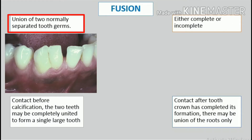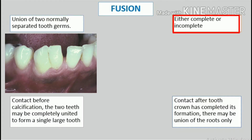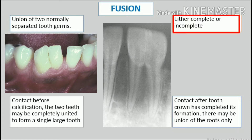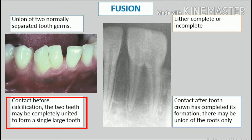Fusion. Fused teeth arise through union of two normally separated tooth germs. Depending upon the stage of development of the teeth at the time of union, fusion may be either complete or incomplete. If contact occurs early, at least before calcification begins, the two teeth may be completely united to form a single large tooth.